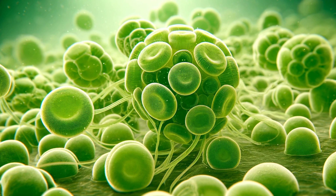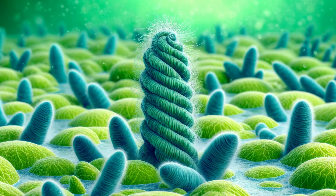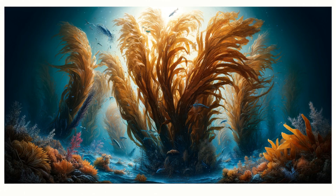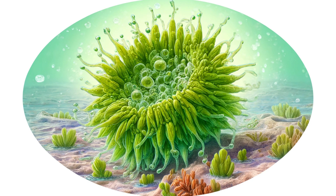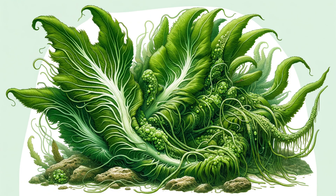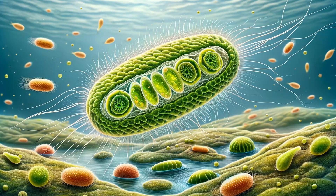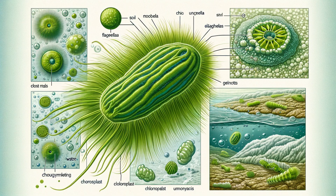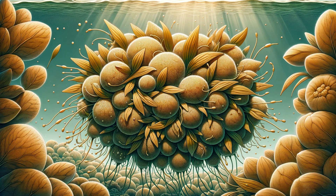Algae are a diverse group of photosynthetic organisms found in various aquatic environments. They range from microscopic phytoplankton to large seaweeds. Here are 10 types of algae detailed with their characteristics, habitats, and significance.